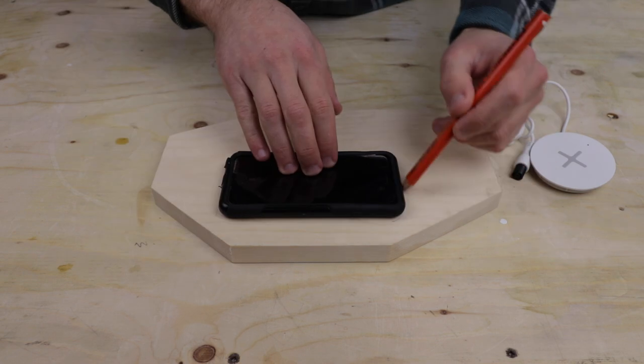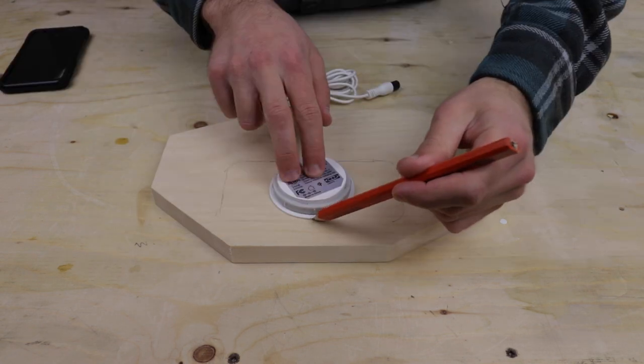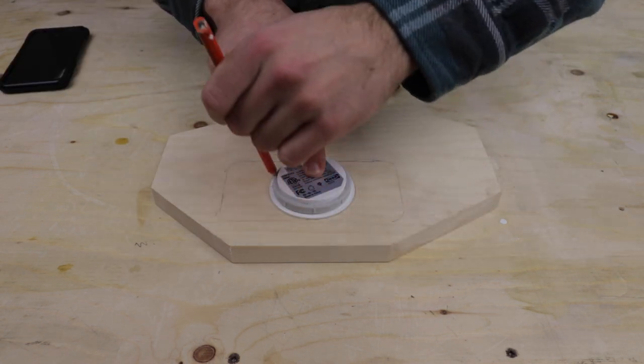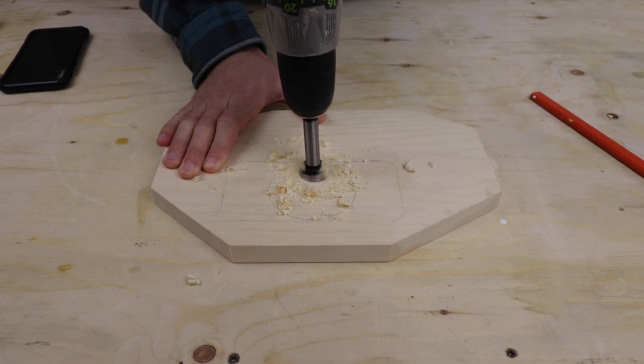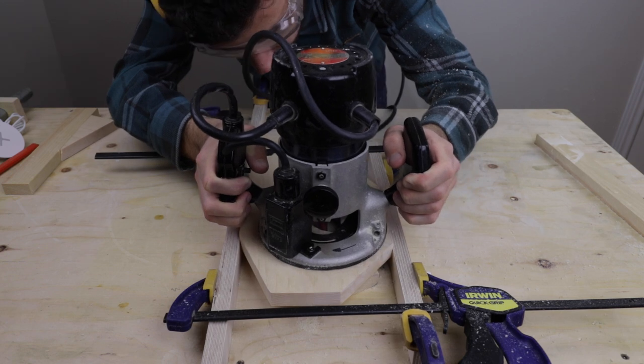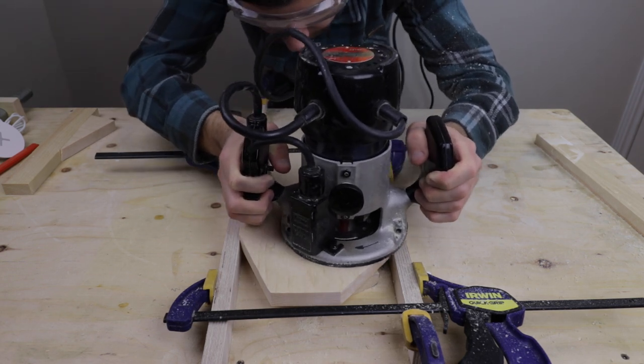With this proof of concept, I traced the outline of my phone, as well as the charger, onto the bottom of the base plate. Then I drilled out a recess for the router bit. I did several passes with my router, being very careful not to go too deep on the final pass.